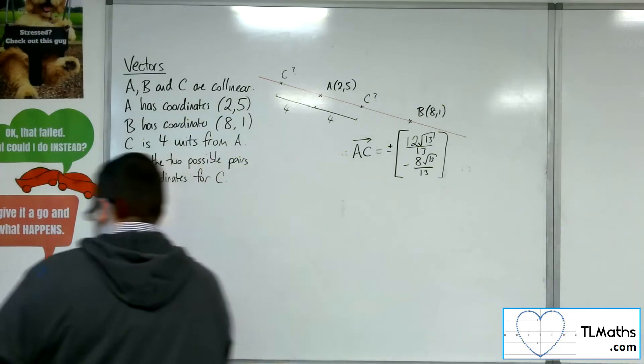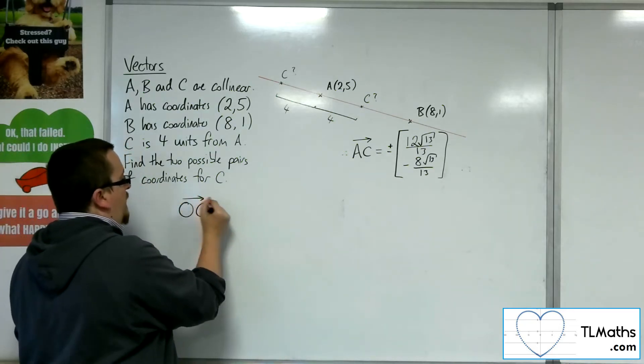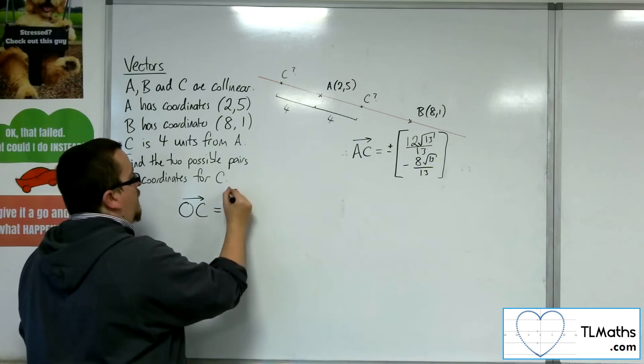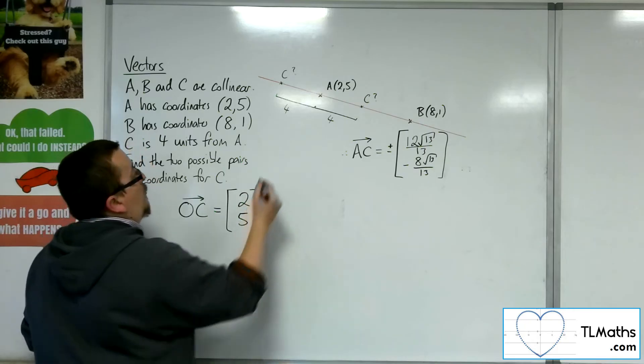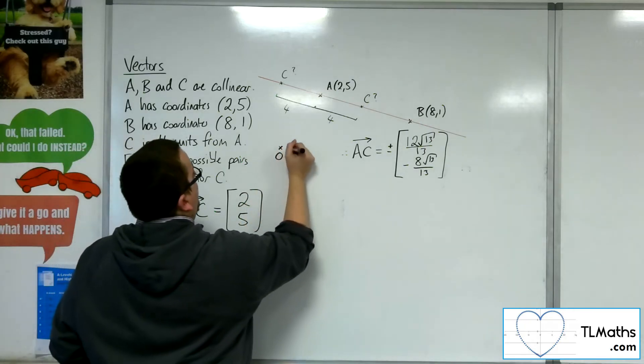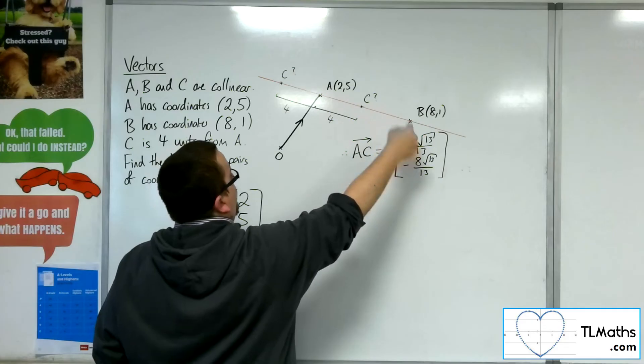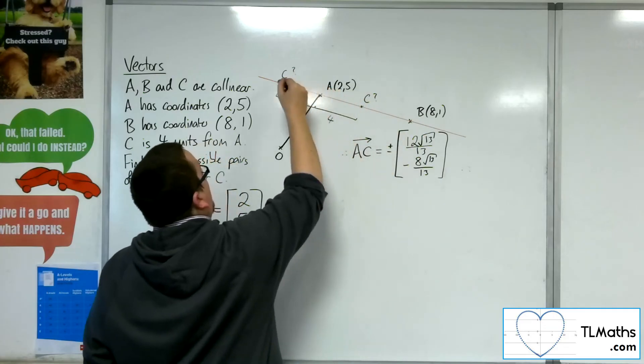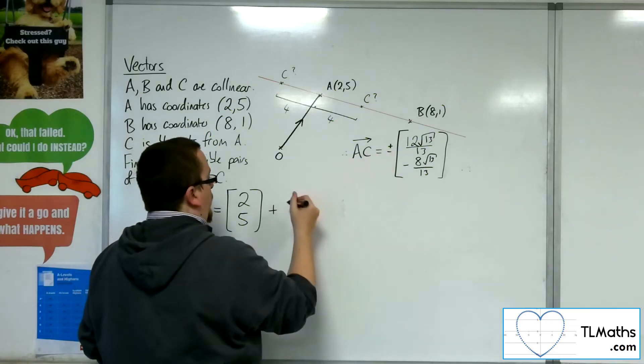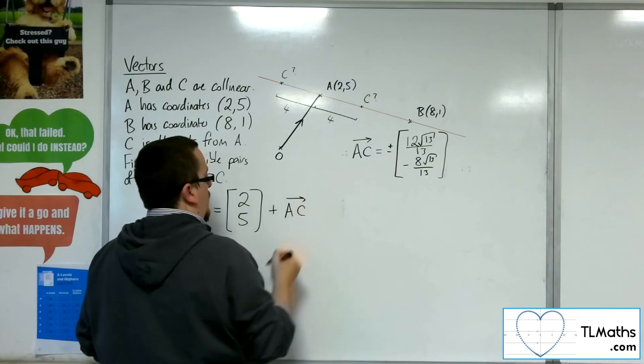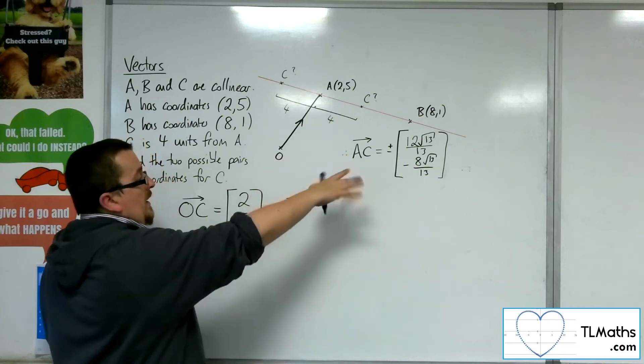So I know that the position vector of A is just 2, 5. So I can get rid of that now. So O to C, the position vector of C, will be the position vector of A. So OA, so that gets me from the origin down here. That gets me to A. And then I can add on this vector to get to that one. Or I can subtract it to get to that one. So plus this vector here. Or, well, it's plus minus, isn't it?